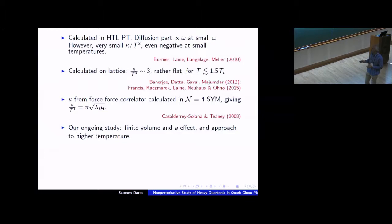Okay. The first lattice calculations of this object came sometime back from us and from Bielefeld. And what was done for other temperatures less than equal to 1.5 Tc. And what one got was kappa by T cubed rather flat in temperature, with a value of about three.